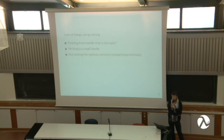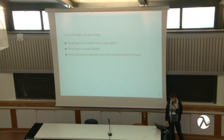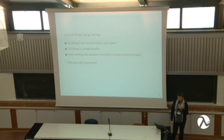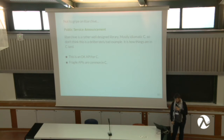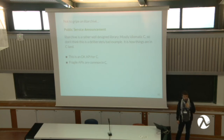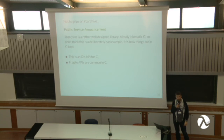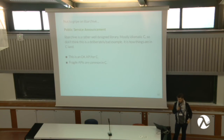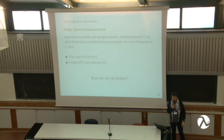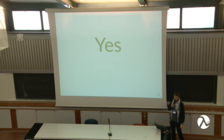What actually should happen is that libarchive returns a special value called archive_fatal when something's broken. But unfortunately, sometimes bugs happen in the archive code itself, and it segfaults again. So maybe we can do better. You can read from a handle that's not open, write to a read handle, or forget to set the options — I was debugging for two hours before I figured out my handle was just not opened. libarchive is not a bad library; it's just how things are in C — the APIs are kind of fragile.